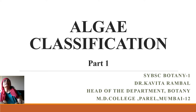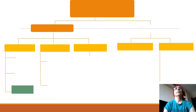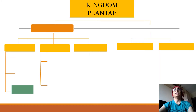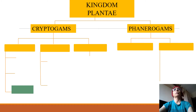Before we move to the classification of algae, before starting the classification of plants, let us study where algae is located in the plant kingdom. Kingdom Plantae is divided into two groups: the lower group, the cryptogames, and the higher plants, the phanerogames.